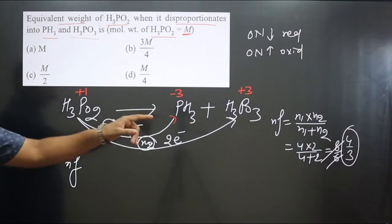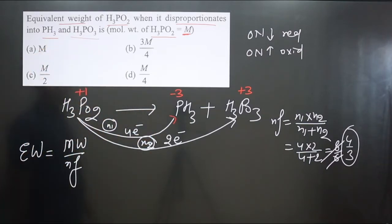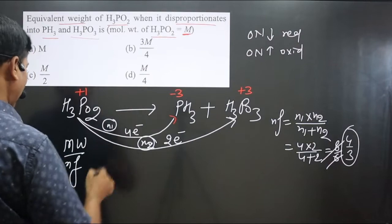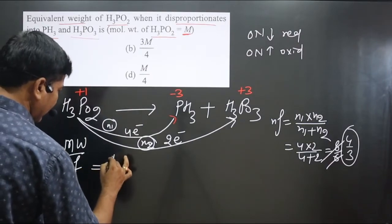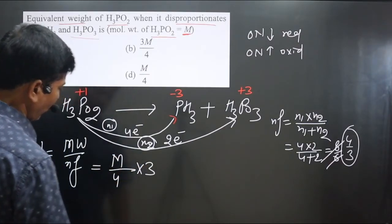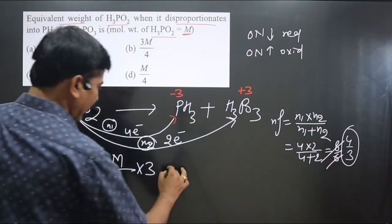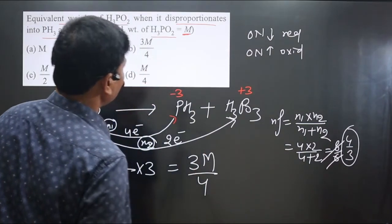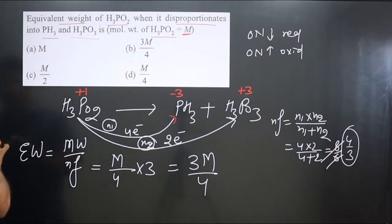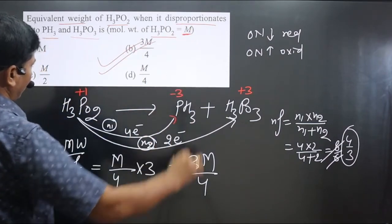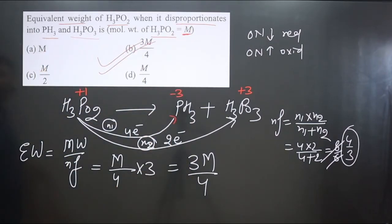Simplifying 8/6 gives 4/3. So the n-factor for H3PO2 is 4/3. The molecular weight is M, so the equivalent weight = M ÷ (4/3) = 3M/4. Therefore, option B — 3M/4 — is correct.